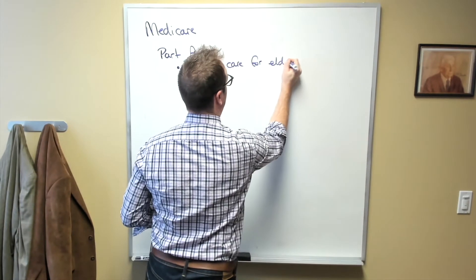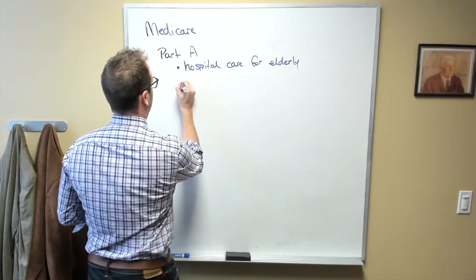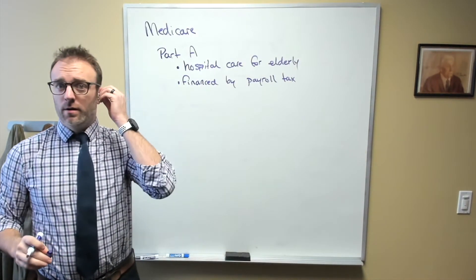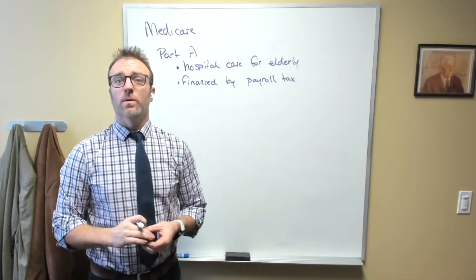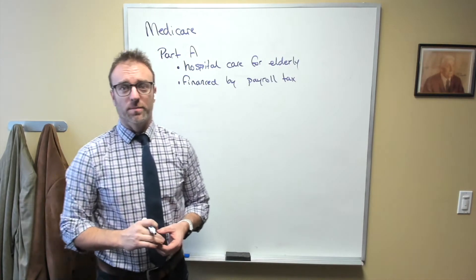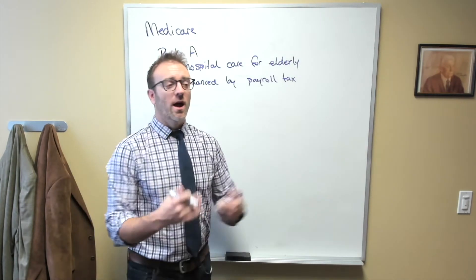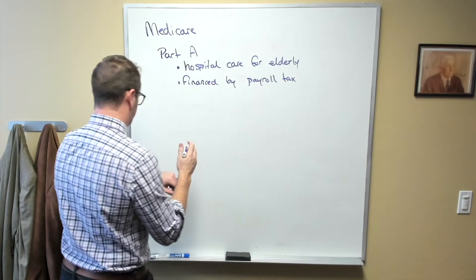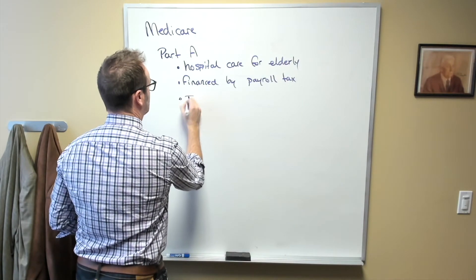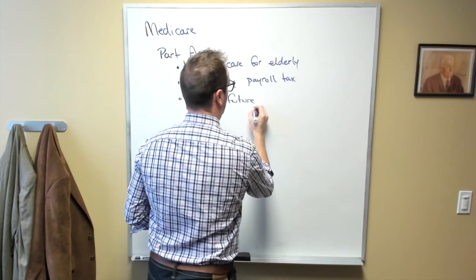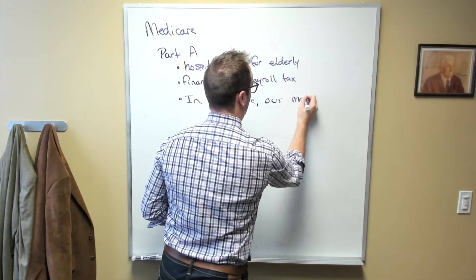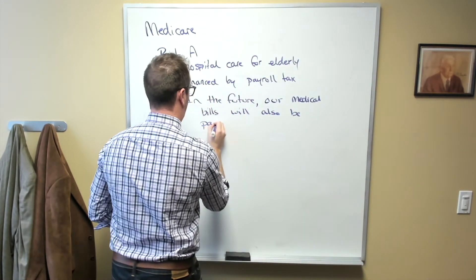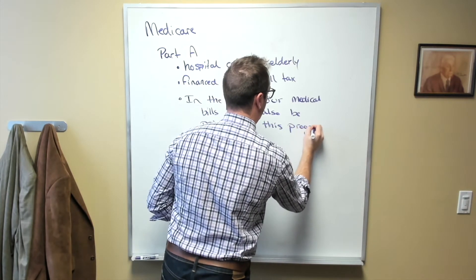So this covers hospital care for elderly or people of a certain age or higher, and it's financed by a payroll tax. So in a very real sense, those of us who are currently being paid for working a job are actually paying the medical bills of senior citizens today through the Medicare tax. In other words, our income is taken and redistributed toward senior citizens. Now this works out okay, at least in principle, because in the future, as long as Medicare remains a program, our medical bills will also be paid by this program.